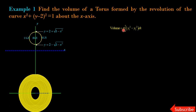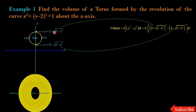Now we want to find the volume. Volume equals π times the integral from a to b of (y₁² − y₂²) dx, where y₁ and y₂ are the upper and lower limits of the circle. The upper limit is y₁ = 2 + √(1 − x²) and the lower limit is y₂ = 2 − √(1 − x²). Substituting both values, we have π times the integral from −1 to 1 of [2 + √(1 − x²) − (2 − √(1 − x²))]² dx.